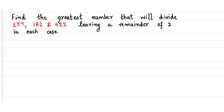Hello everyone, welcome to my channel The Colors of Mathematics. Today we will be discussing a word problem from HCF and LCM, Class 6. The problem is: find the greatest number that will divide 137, 182, and 422 leaving a remainder of 2 in each case.